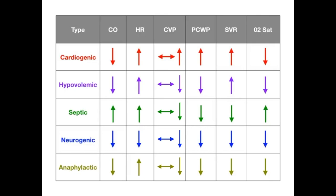The exception for oxygen saturation in septic shock: oxygen saturation is up, but oxygen delivery to target tissues is actually down. This is a byproduct of the inflammatory process — the sat arrow goes up, but actual oxygen delivery is impaired. To memorize this, remember that septic equals sat — just match those S's. Septic shock is the one where sat is up.